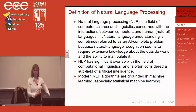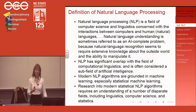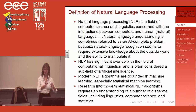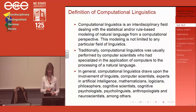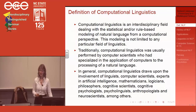NLP has significant overlap with computational linguistics — I think these two terms are basically synonymous — and it's often considered a subfield of artificial intelligence. A lot of what we do is grounded in machine learning, especially statistical approaches. Research in this field is always located between different disciplines: linguistics, computer science, statistics, mathematics, logic, philosophy, cognitive science, psychology, and neuroscience.